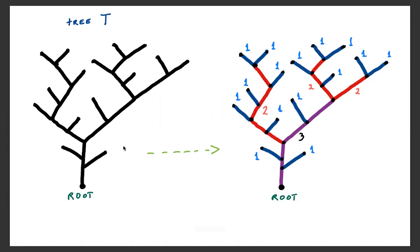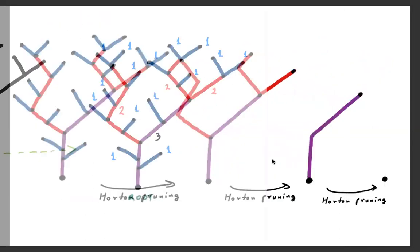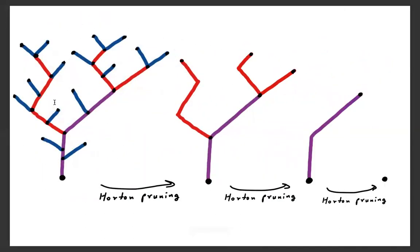Consider a rooted, reduced tree. The Horton pruning produces a hierarchy of segments in the following way: start with the tree and start pruning off the leaves as the first Horton pruning. By leaves we mean leaf vertices and their respective parental edges.